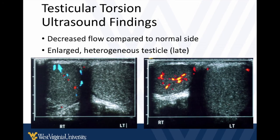Here are examples of torsion. On one side we see flow with the color box across the whole thing, and no flow on the other side. In this example the testicle has become swollen with no flow. We want to see flow centrally and throughout — not just little bits on the edges, which may just be peripheral flow. The longer it's been going on, the more swollen it may be, though early on it may not be very swollen. Look for these findings and then do your color Doppler analysis.